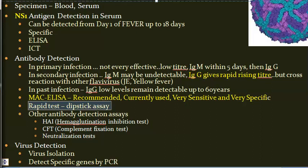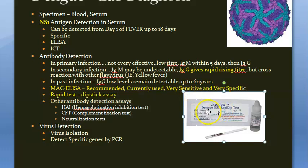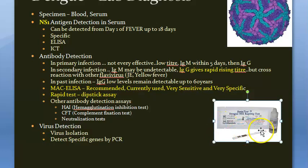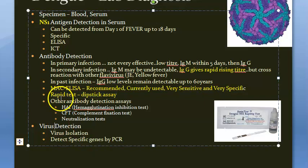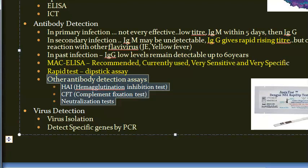Rapid test dipstick assays are also available — these detect whether antibody against dengue is present. Other antibody detection assays include hemagglutination inhibition test (HAI), complement fixation test (CFT), and neutralization test.